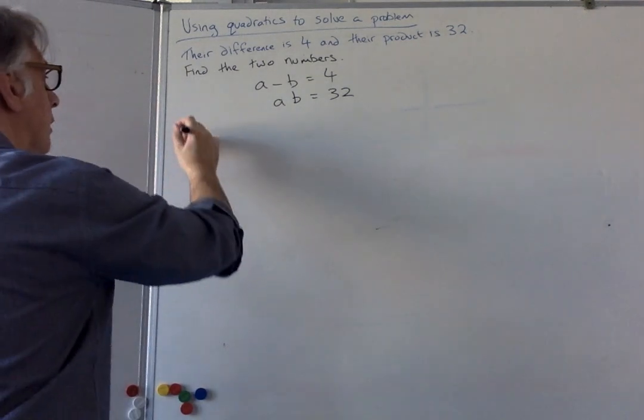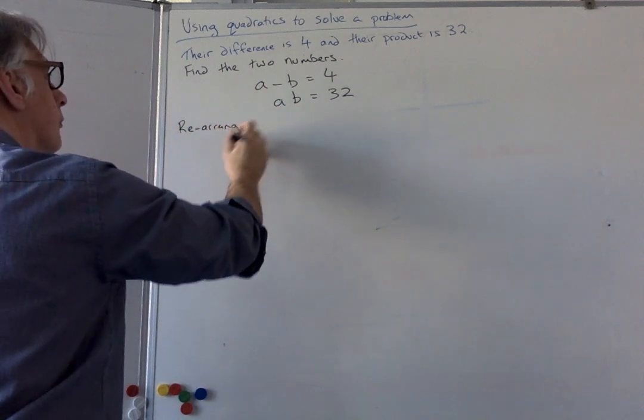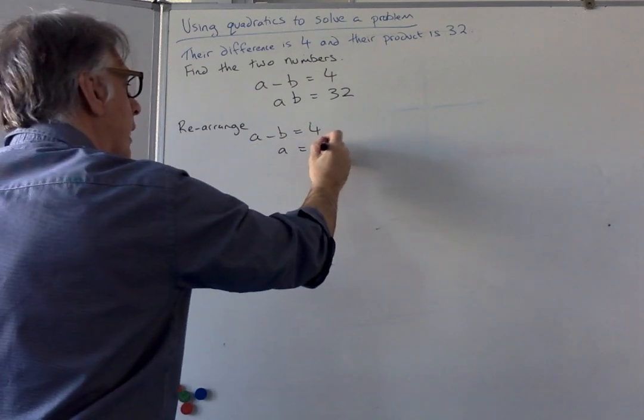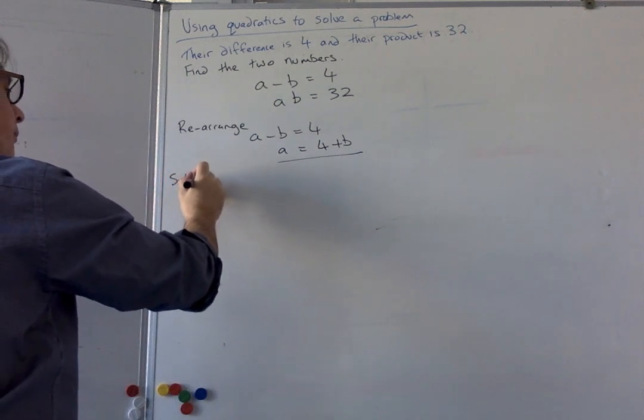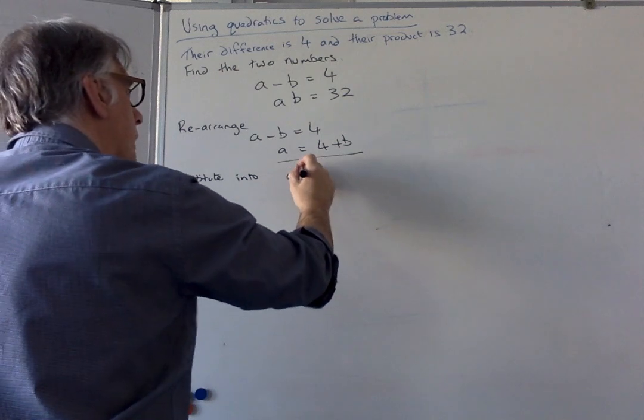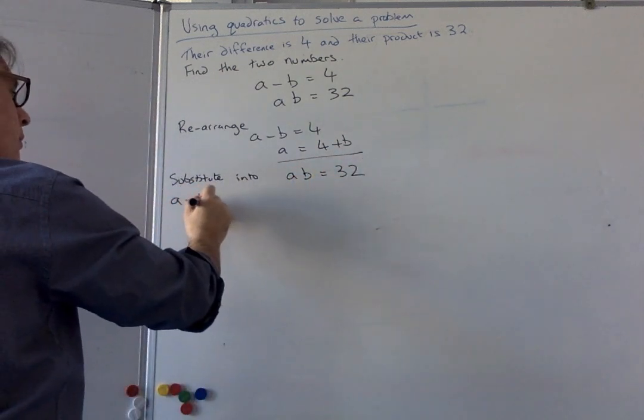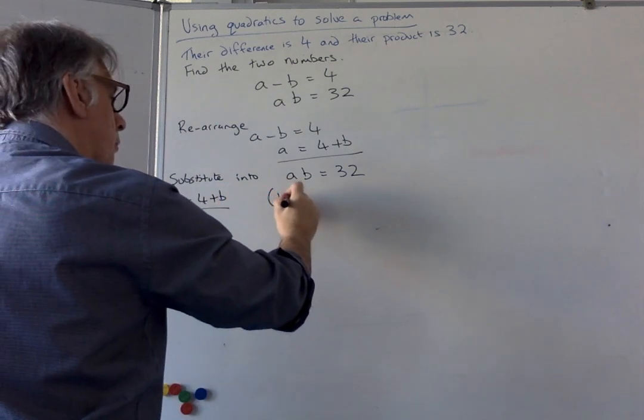Now the first thing I'm going to do is I'm going to rearrange A minus B equals 4. I'm going to make A the subject, so I get 4 plus B. Now I'm going to substitute into AB equals 32, and for A I'm going to replace A with 4 plus B. So where the A is, now I've got 4 plus B.